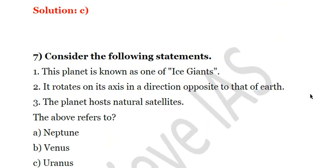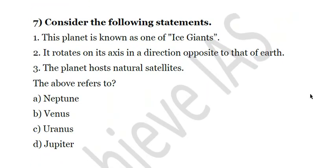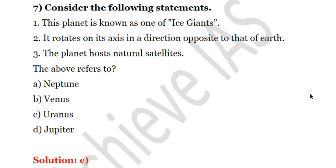Next question: consider the following statements — first, this planet is known as one of the ice giants; second, it rotates on its axis in a direction opposite to that of Earth; third, the planet hosts natural satellites. The above refers to Uranus. Uranus has natural satellites and is one of the ice giants. There are two ice giants in the solar system: Neptune and Uranus. Only two planets revolve in the direction opposite to Earth — Venus and Uranus — but Venus doesn't have natural satellites and is not an ice giant. The answer is C.